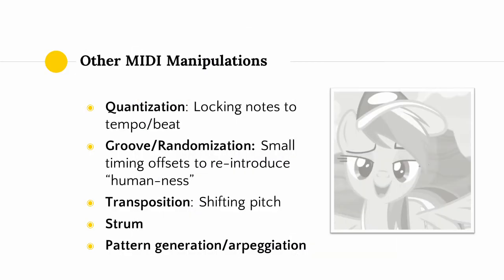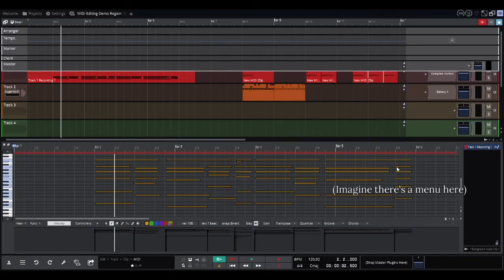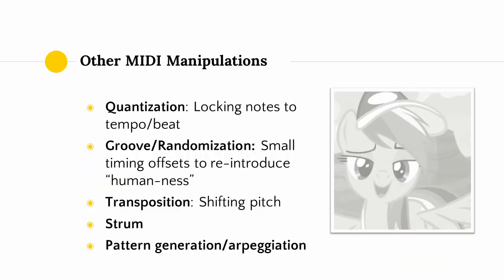The last thing to cover in this section are a few other MIDI manipulations. One of the most useful is quantization, which allows us to lock the imperfectly timed notes of our recording into the tempo grid of our song. Quantization is one of the reasons that music producers are accused of having no actual musical skill. Groove and randomization are usually applied after quantization — they consist of applying small timing offsets to each note so that not everything is strictly on beat. In other words, after you take the suckiness out of your timing, you add it back in so you sound more like a human instead of a computer.